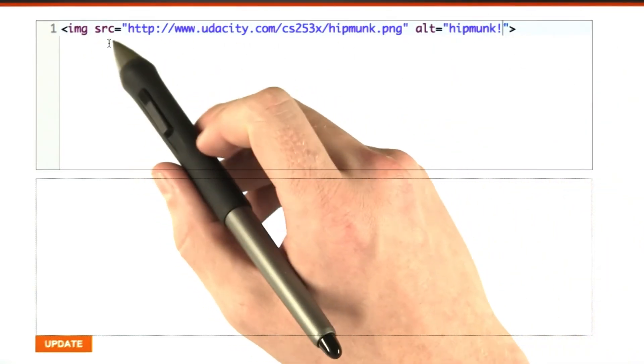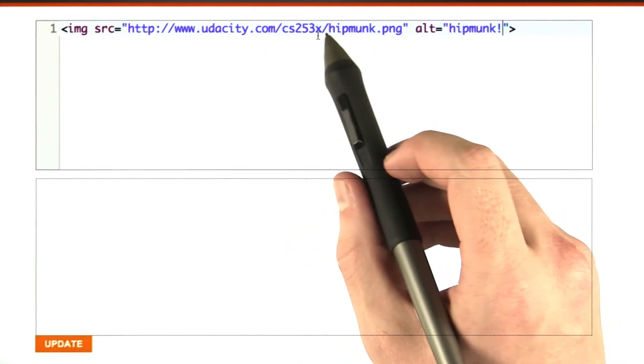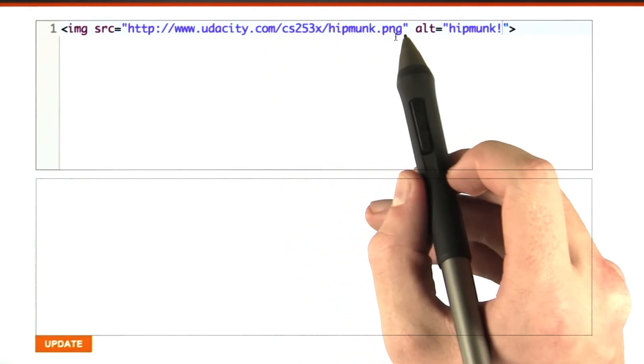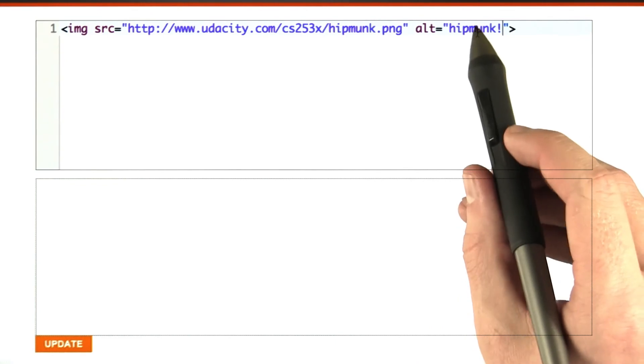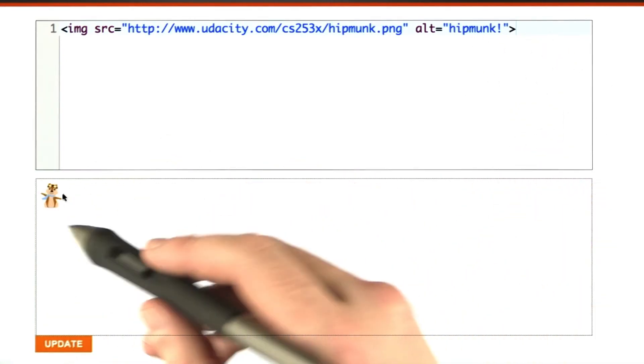Okay, so we've got our image tag, source equals udacity.com and hipmonk.png. This is our URL of an image that I've prepared for us. We've got some alt text there. Let's go ahead and click update. And ta-da, there's our image.